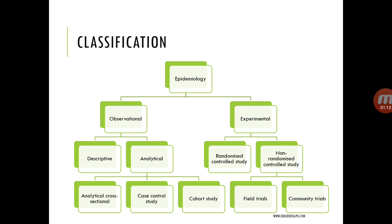Experimental studies are further classified as randomized control studies and non-randomized control studies. Non-randomized control studies include field trials, community trials, and natural experiments — like the atomic bomb explosion at Hiroshima and Nagasaki.